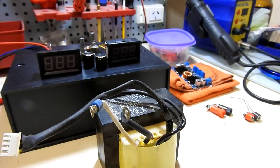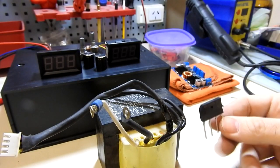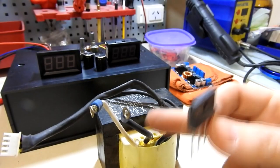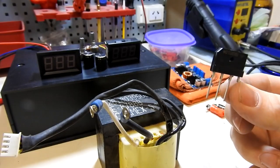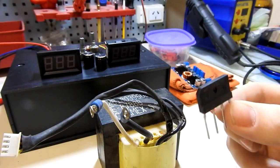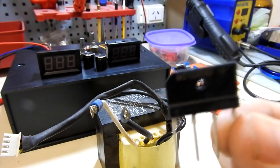Vamos a seguir con el siguiente elemento. Lo que vamos a sacar a la salida de esto va a ser una corriente rectificada. Para ello vamos a necesitar un puente rectificador.